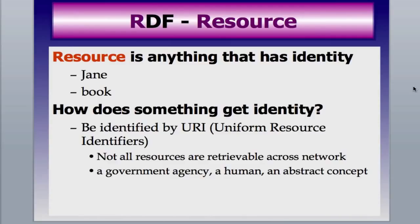The first part of RDF — the R — is Resource. A resource is anything that has an identity, in this case Jane or the book. They can be identified with a URI, a Uniform Resource Identifier. Not all resources are retrievable across a network — if you put in a URL, that will get a web page off the network. But a URI is just an identifier, sort of like a namespace used in XML. Examples of a URI could be a government agency, a human, somebody's pet, or even an abstract concept such as love or marriage.